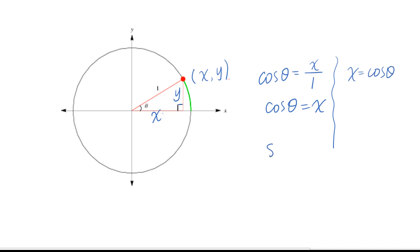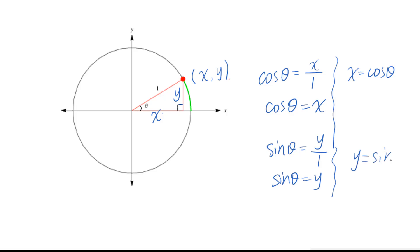For sine theta, we get sine theta equals y, or y equals sine theta. And for tangent theta, that equals y over x. So we can label the coordinate in a unit circle as tangent theta, that is y over x.